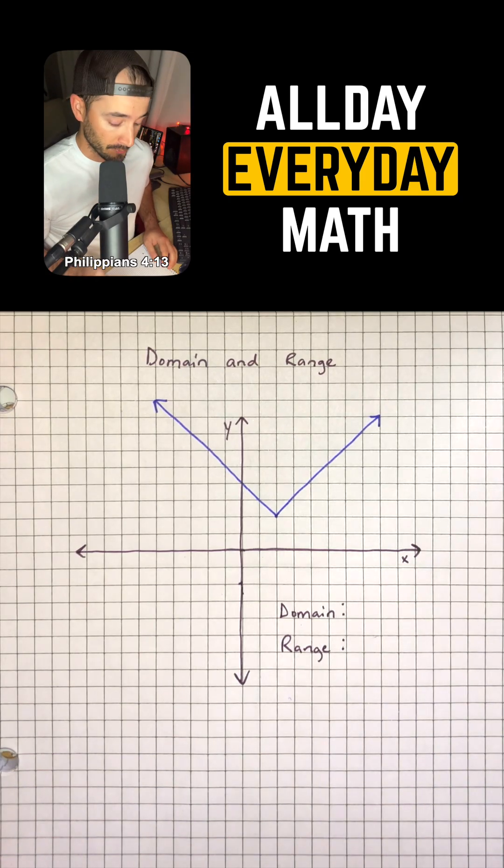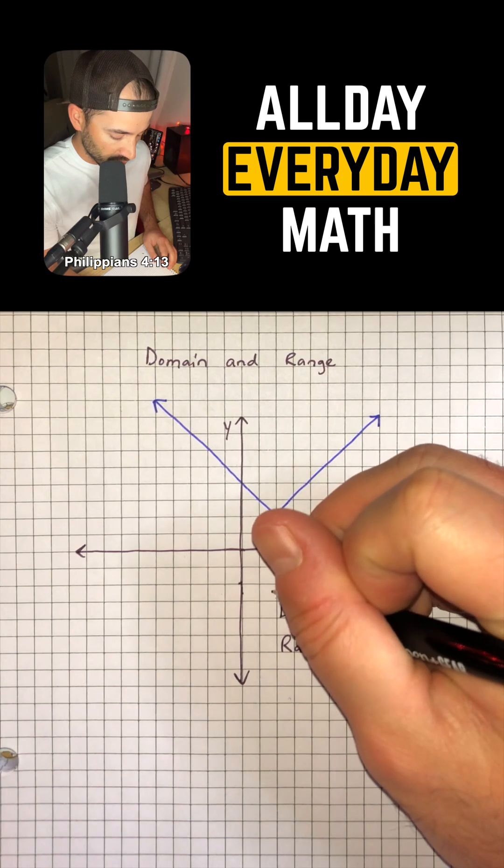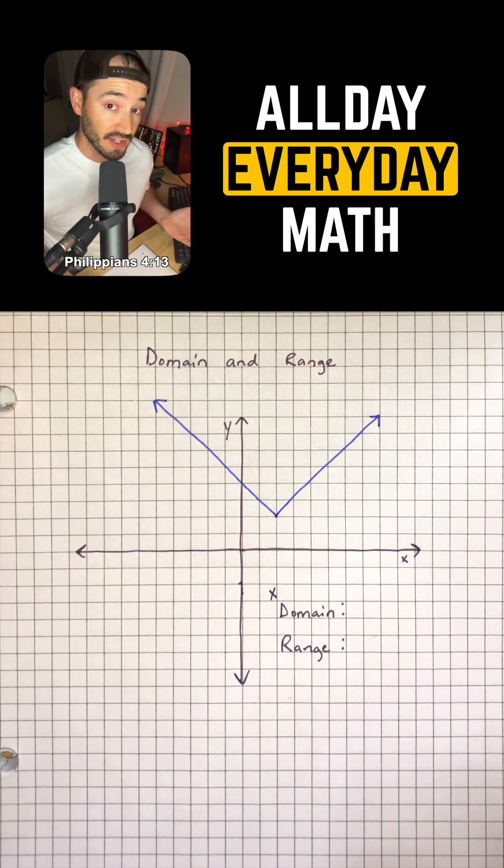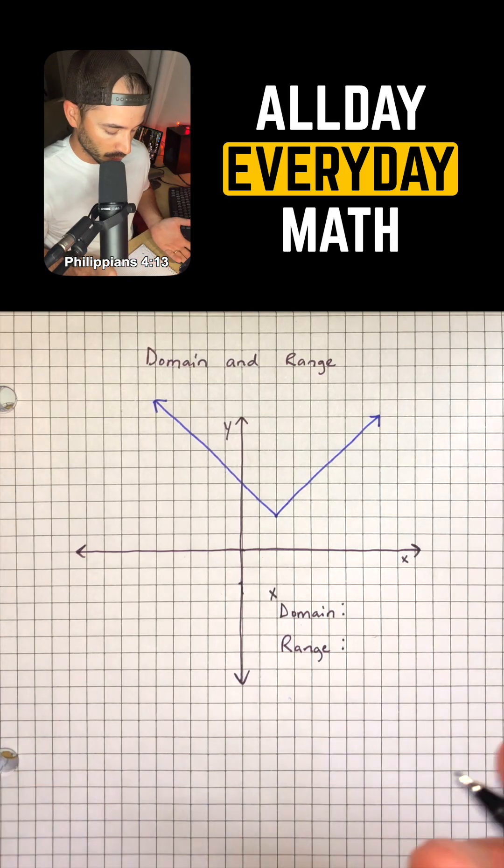Okay, so first of all, let's remember that domain is always going to be the X values in a function and on a graph, we're going to look left to right.